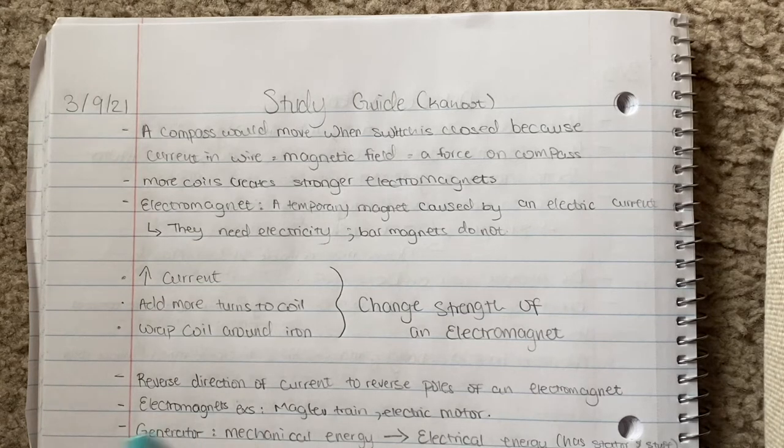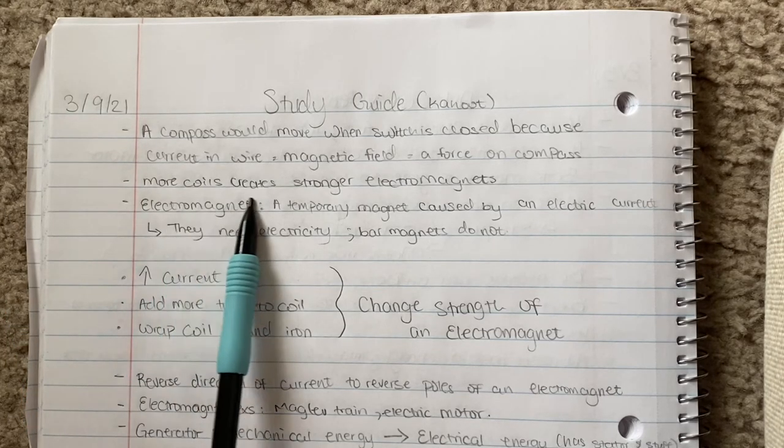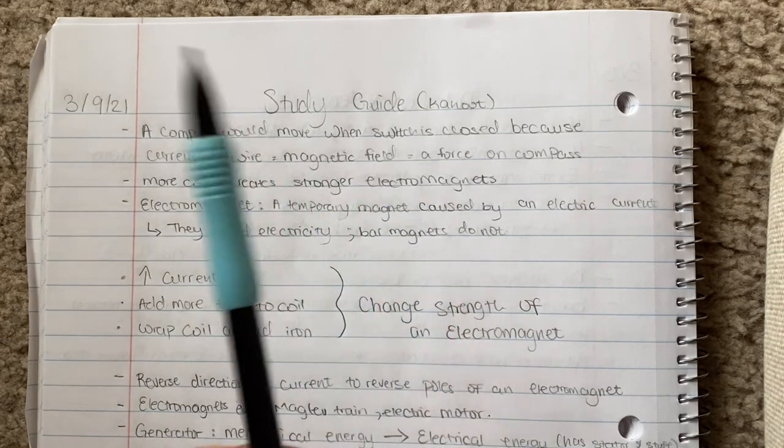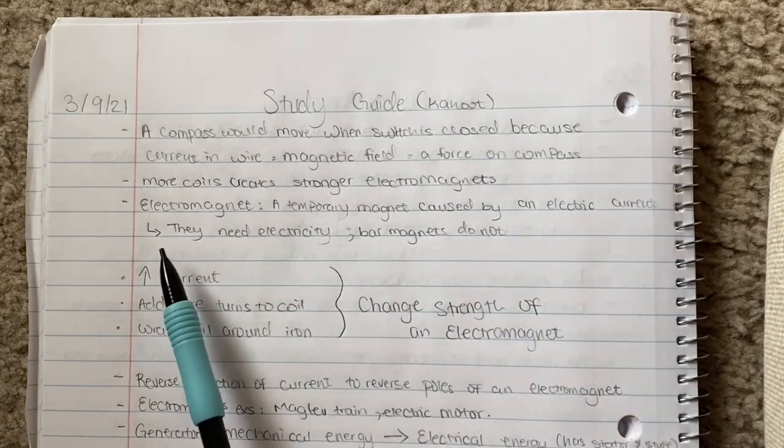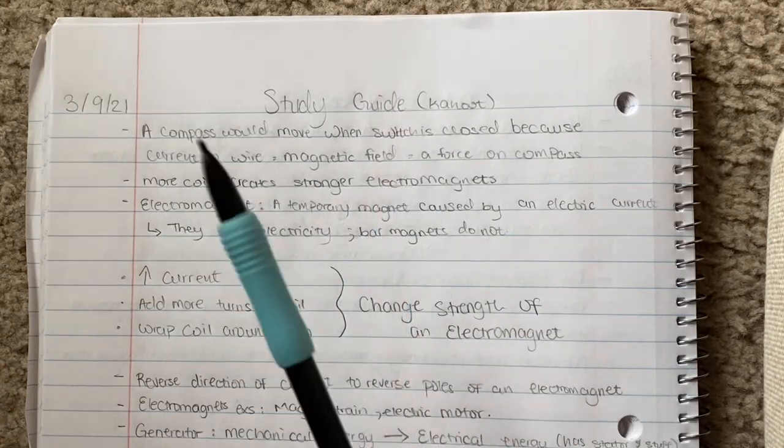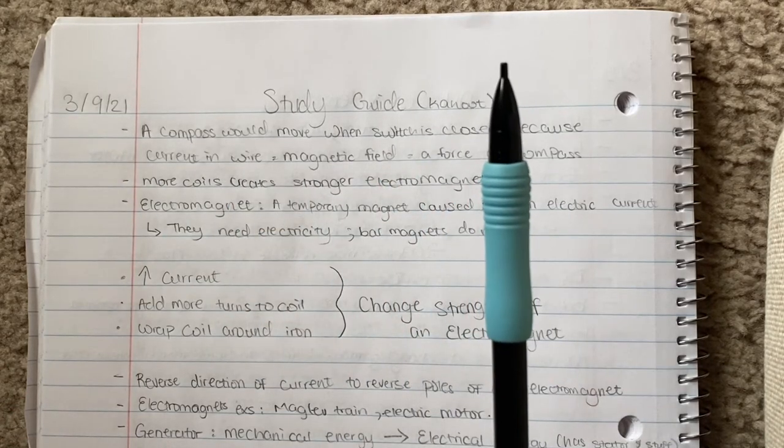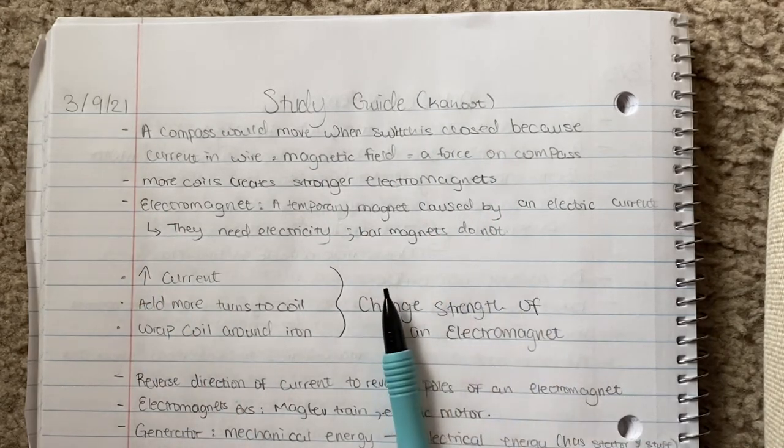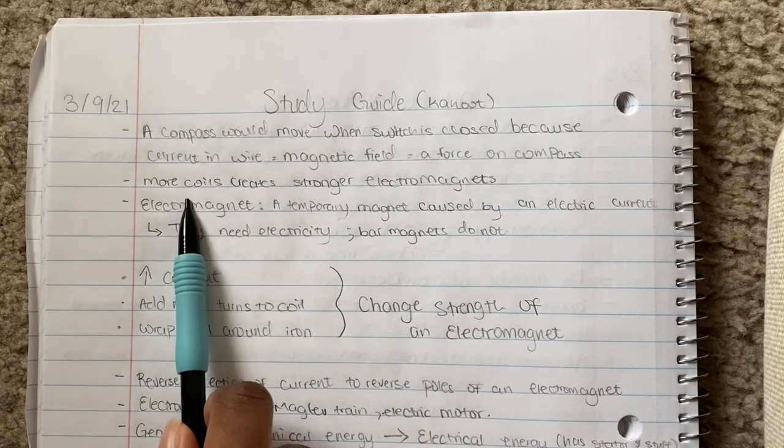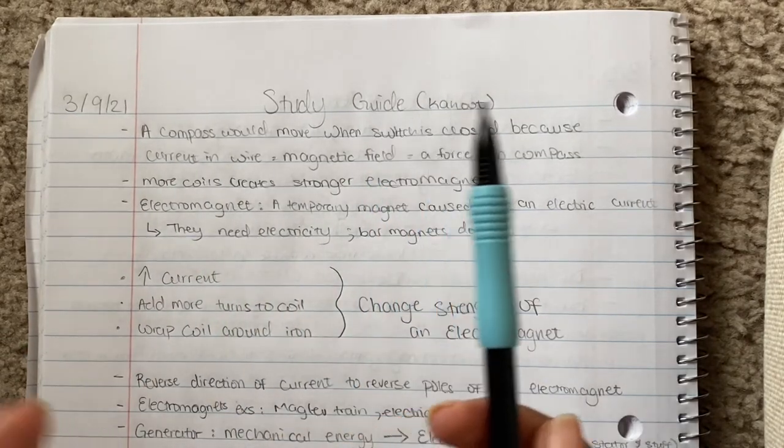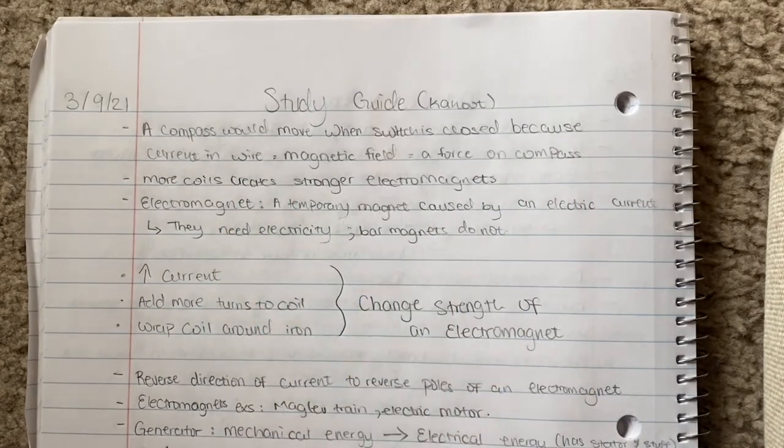More coils create stronger electromagnets. Electromagnets are temporary magnets caused by an electric current. They need electricity and they're temporary magnets. The iron core is wrapped around in coils and connected to a battery or voltage source with wire. If you were to add more coils, it would increase the strength of your electromagnet and you can pick up more stuff with it. More coils makes it stronger.